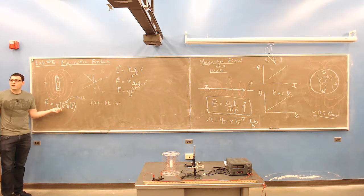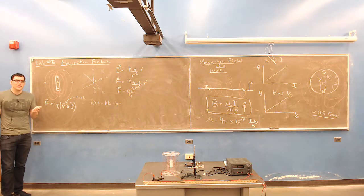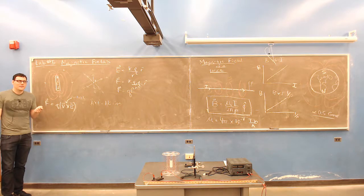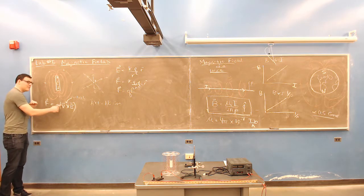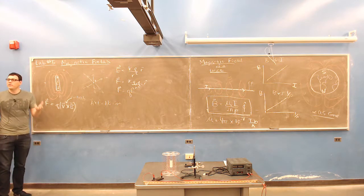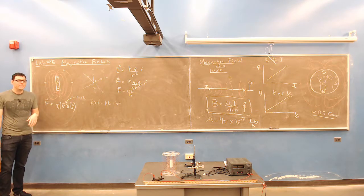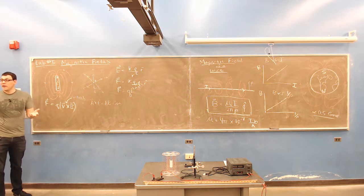So what's the force on a stationary particle in a B field, in a magnetic field? Zero, right? Because the velocity is zero, zero times anything is zero, there's no force. So you have to be moving, the charge has to be moving in the magnetic field for there to be a force, a magnetic force.